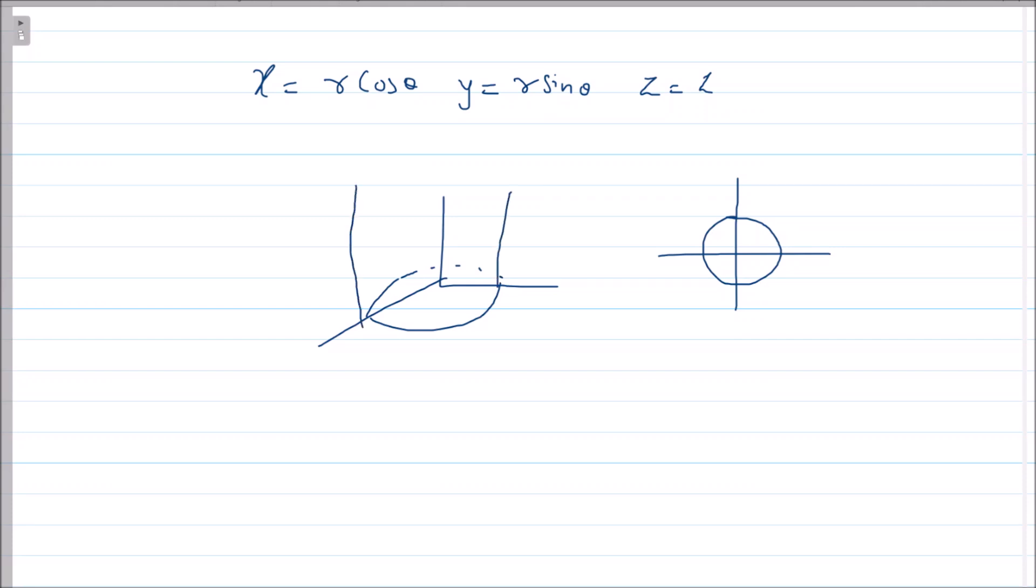My drawing is not that good but please bear with me. So this is a cylinder with z-axis as the axis of cylinder. This you get when your z = x² + y².